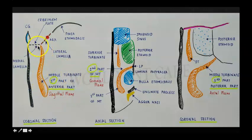The first part attaches to the junction between the medial and lateral lamella of the cribriform plate. The second part or the ground lamella is present in a coronal plane, attaches to the lamina papyracea.